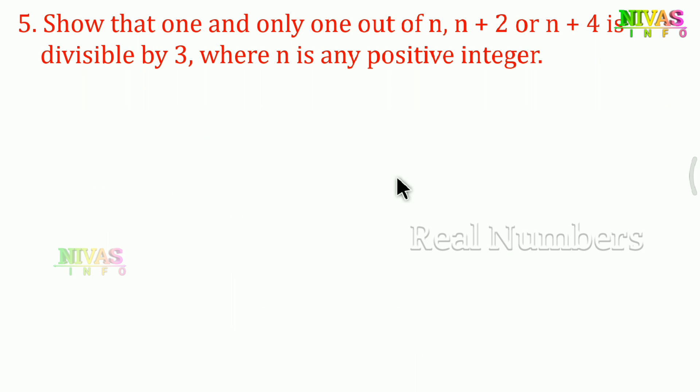Next question 5: Show that one and only one out of n, n+2, or n+4 is divisible by 3, where n is any positive integer. Out of these three conditions, only one can be divisible by 3. We need to prove this.